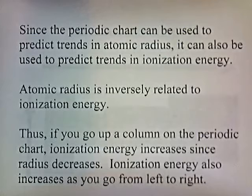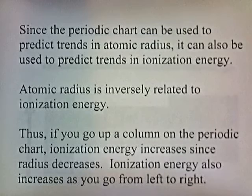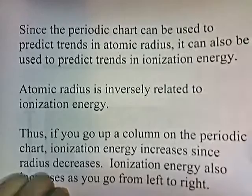Since the periodic chart can be used to predict trends in atomic radius, it can also be used to predict trends in ionization energy. Atomic radius is inversely related to ionization energy. If you go up a column on the periodic chart, ionization energy increases since the radius decreases. Ionization energy also increases as you go from left to right.